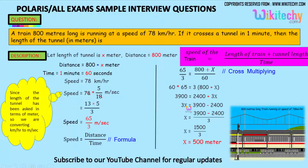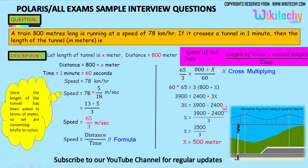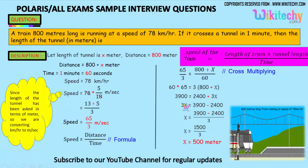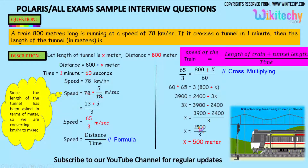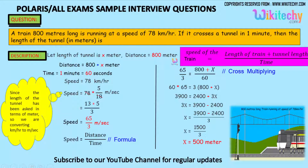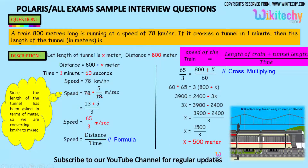So 3x equals 3900 minus 2400, which gives 3x equals 1500. Dividing both sides by 3, x equals 500 meters. So the length of the tunnel is 500 meters.